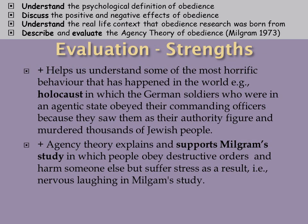A strength of agency theory is that it helps us understand some of the most horrific behavior in the world. For example, the Holocaust: German soldiers were in an agentic state when they obeyed their commanding officers, seeing them as authority figures, and as a result murdered thousands of Jewish people.